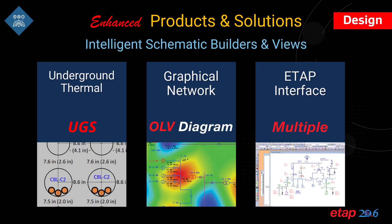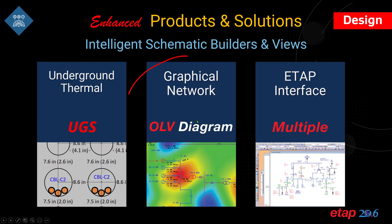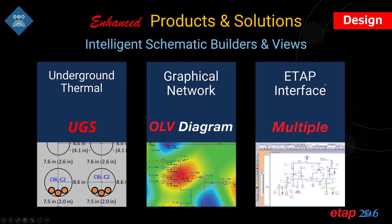Intelligent schematic builders and views have been expanded by integrating the UGS system with the cable magnetic field calculations. The one-line diagram has new capabilities for visualization and representation of the graphical results and information. The ETAP interface has multiple enhancements throughout the program.